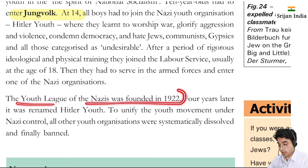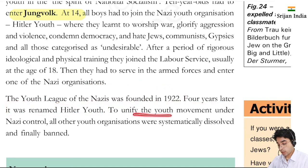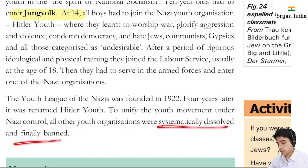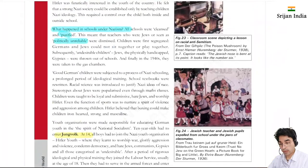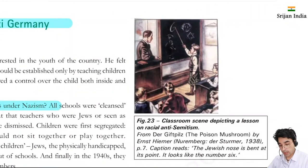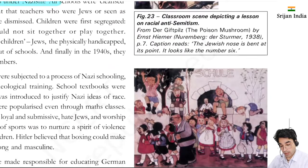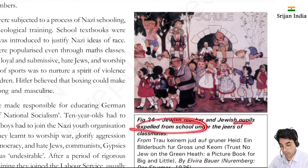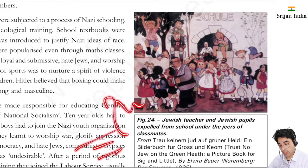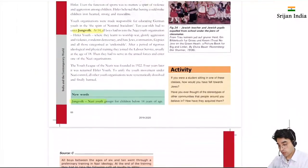The youth league of the Nazis was founded in 1922. Four years later it was renamed Hitler Youth to unify the youth movement under Nazi control. Many such organizations came up and were systematically dissolved and finally banned. In the classroom scene depicting a lesson of racial anti-Semitism, at such a young tender age this was being taught to them. A Jewish teacher and Jewish pupil were expelled from school in front of their classmates. So again, seeds of violence, hatred, and mistrust were being sown in these young minds.